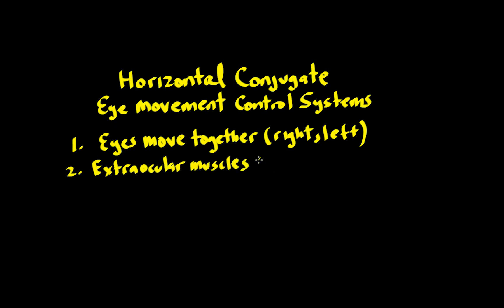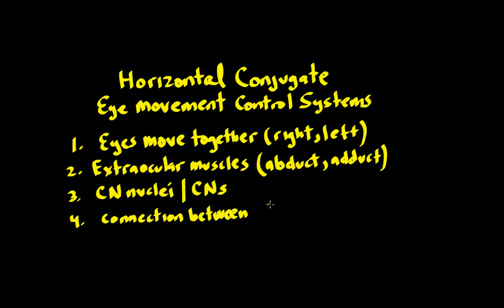To do this, you need extraocular muscles to abduct and adduct eyes. And of course, we need cranial nerve nuclei and their associated cranial nerves and some sort of connection between the cranial nerve nuclei.